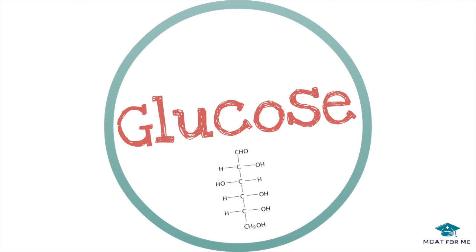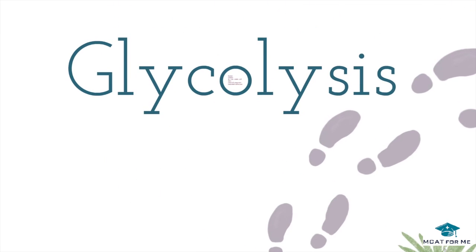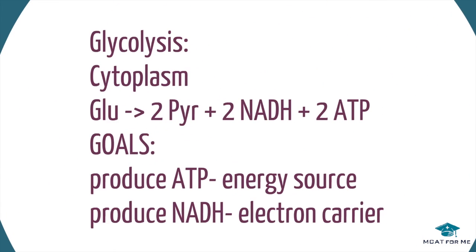The first step starts with glucose, which is a 6-carbon molecule. Once it enters our cells, the first thing that happens is glycolysis. Glycolysis occurs in the cytoplasm, right below the plasma membrane, and it produces pyruvate, NADH, and ATP. Pyruvate is a 3-carbon molecule, so we broke down glucose from a 6-carbon into a 3-carbon molecule, producing NADH and ATP — our energy source and electron carrier.